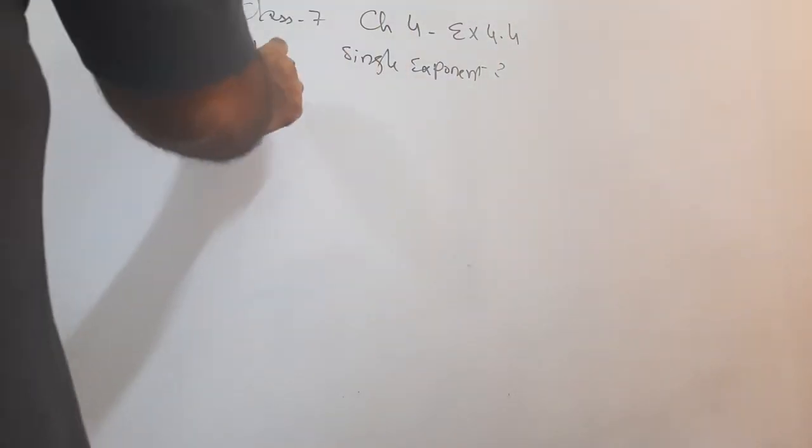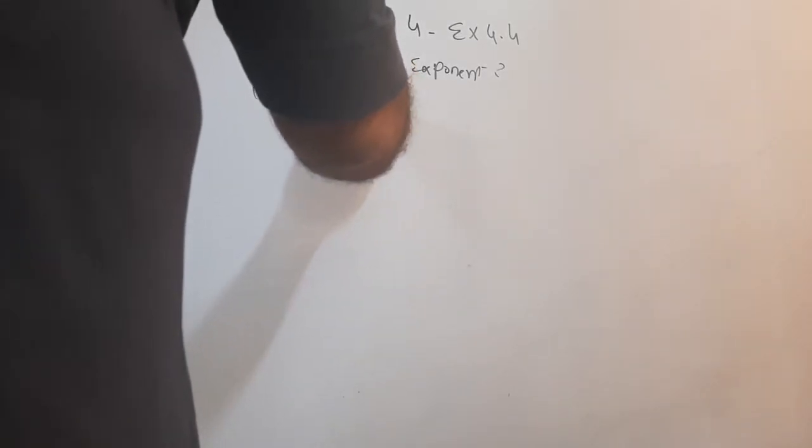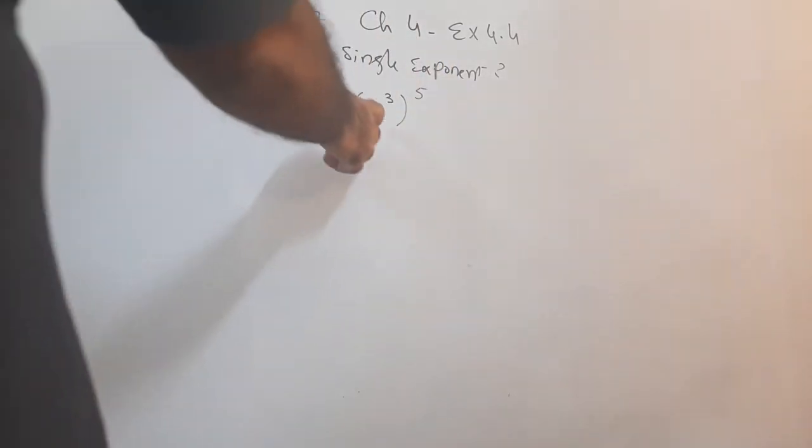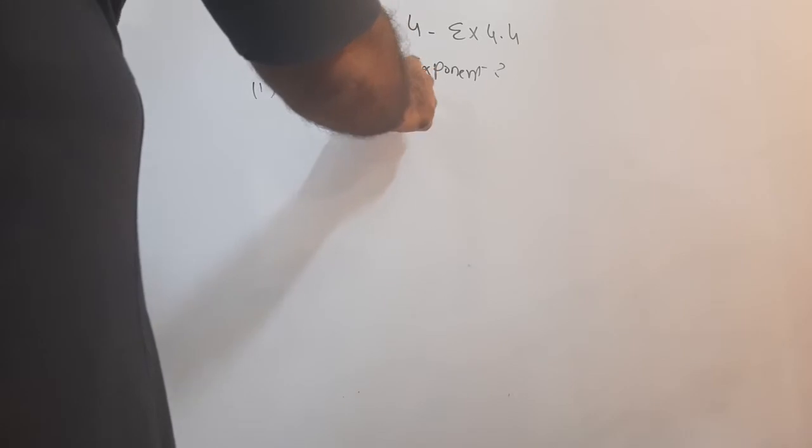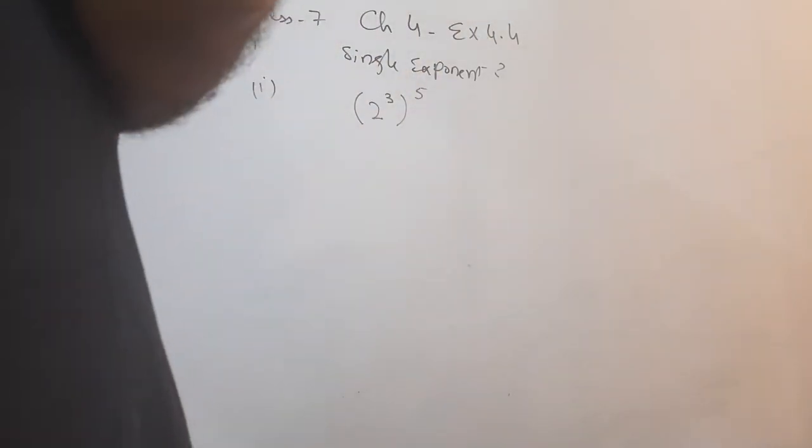The first part is the whole power 5, power here. To get single exponent here, the exponents are multiplied.